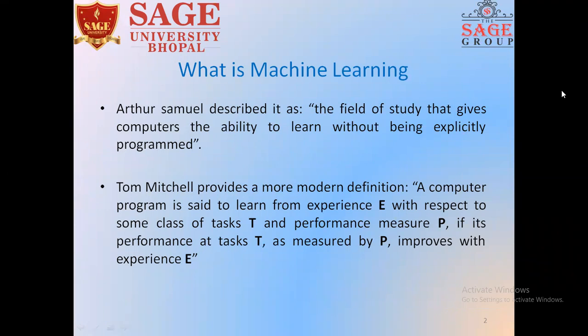Tom Mitchell also provided a more modern definition of machine learning, in which he says that a computer program is said to learn from experience E with respect to some class of task T and performance measure P, if its performance at task T as measured by P improves with experience E.